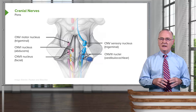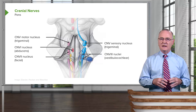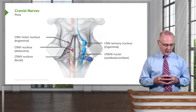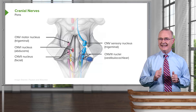These nuclei are paired but visualized on one side to keep the illustration simple. So for the pons, the cranial nerve nuclei are five, six, seven, and eight, all housed in the pons.